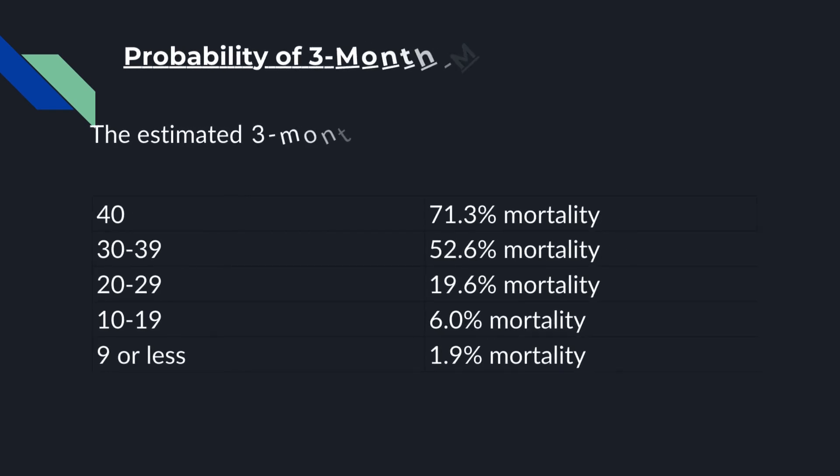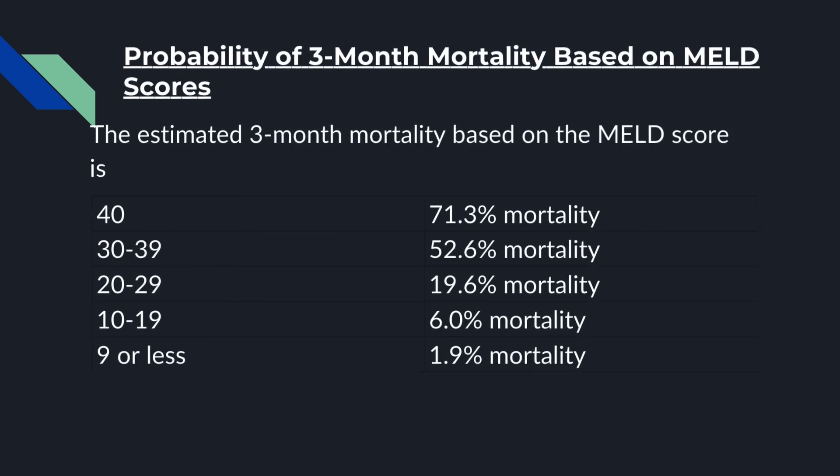Probability of 3-month mortality based on MELD Scores. The estimated 3-month mortality based on the MELD Score is: if MELD Score is 40, then mortality is 71.3%. If MELD Score is 30 to 39, then mortality is 52.6%. If MELD Score is 20 to 29, then mortality is 19.6%. If MELD Score is 10 to 19, then mortality is 6.0%. If MELD Score is 9 or less, then mortality is 1.9%.